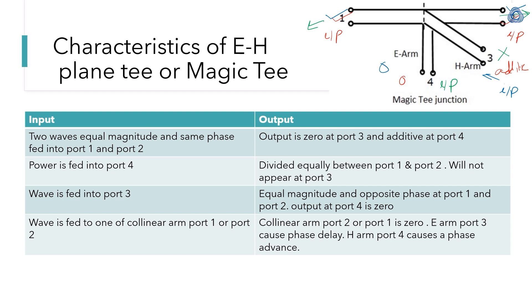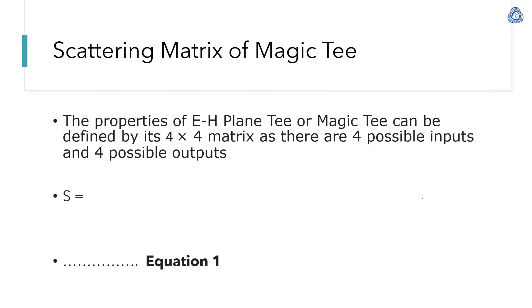Last condition: wave is fed to one of the collinear arms. If 1 is input, then output at 2 is 0. At port 3 it causes a phase delay because it is E arm, and at H arm it causes a phase advance. Similarly when 2 is input, we are not getting output at port 1. E arm has phase delay at output and H arm has phase advance at output.